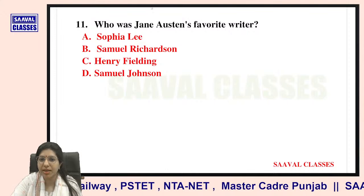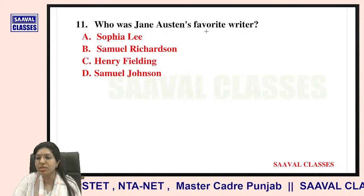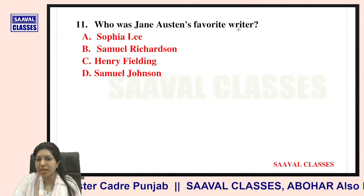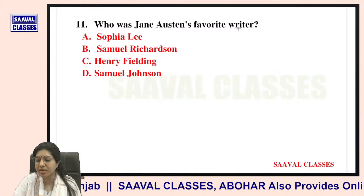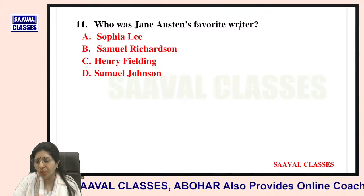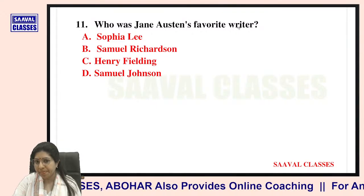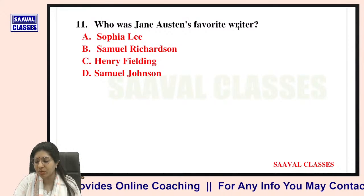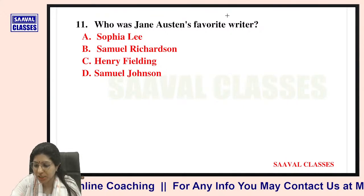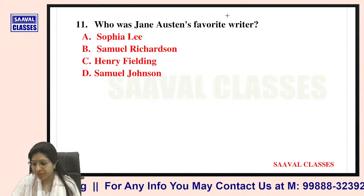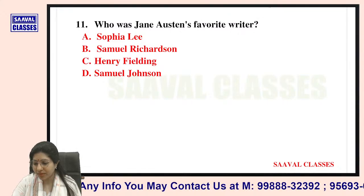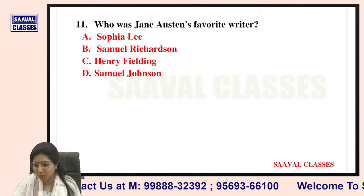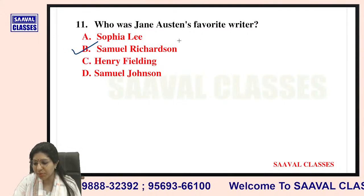Question number eleven: Who was Jane Austen's favorite writer? Options are Sophia Lee, Samuel Richardson, Henry Fielding, or Samuel Johnson. Those answering B are correct — it was Samuel Richardson.